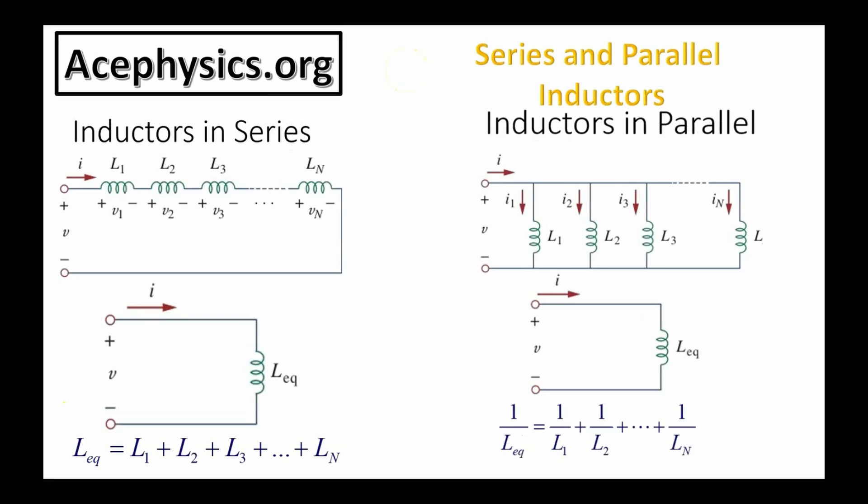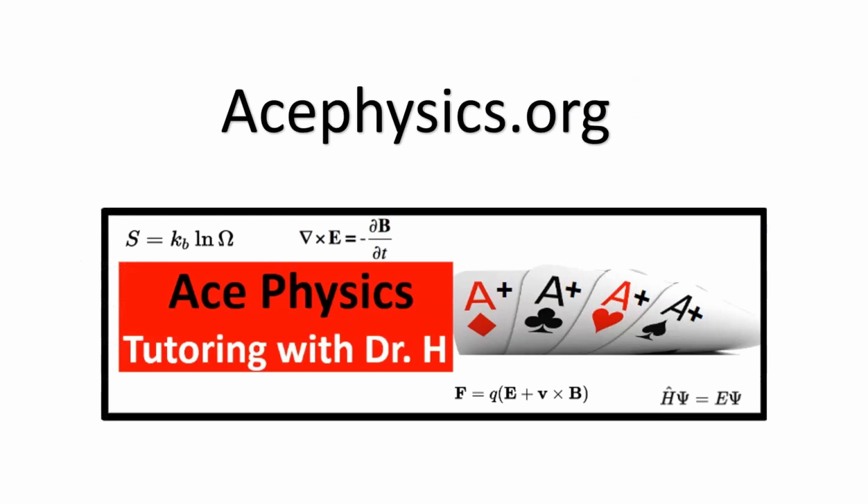On this slide, I present the formulas for finding the equivalent inductances in series and parallel combinations. These formulas follow the same rules as those used for calculating equivalent resistances in series and parallel combinations. If you have many inductors in series, the equivalent inductance is equal to the sum of each one of the inductance values. If you have several inductors in a parallel combination, the equivalent inductance is given by this formula.